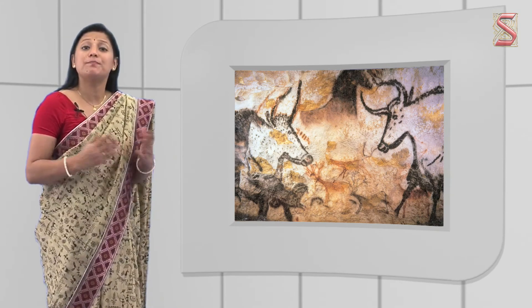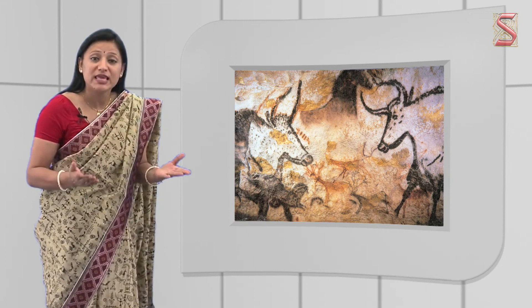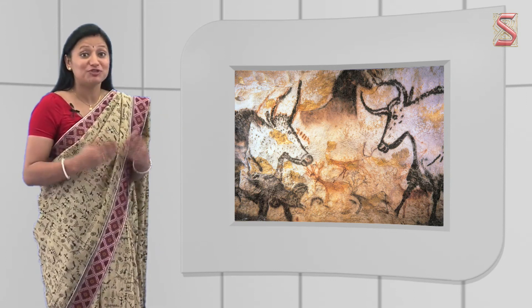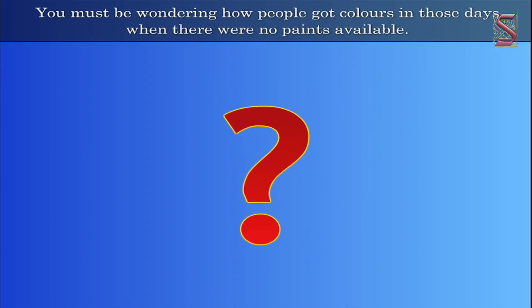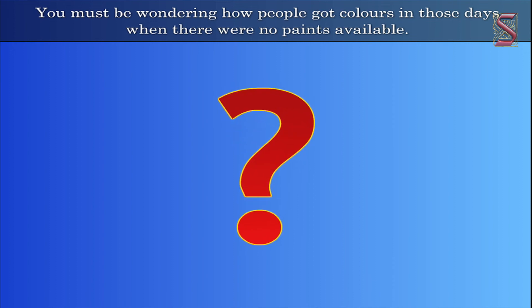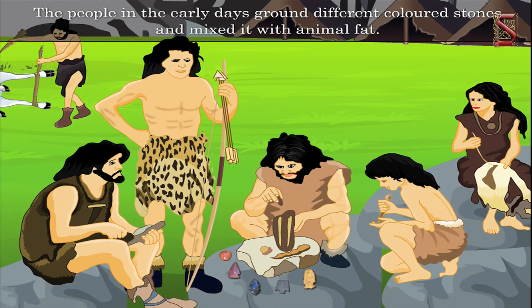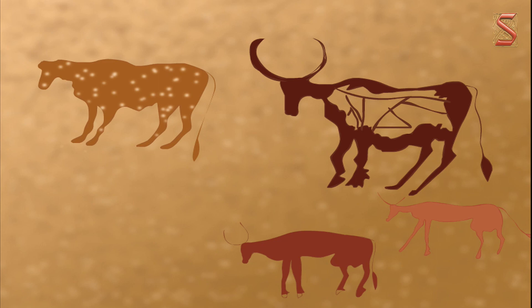Just like how many of us are interested in drawing and painting, the people in the early days were also very interested. The paintings and pictures drawn by the people of the early days can be found in many caves and rock shelters even today. You must be wondering how people got colors in those days when there were no paints available. The people in the earlier days ground different colored stones and mixed it with animal fat. The pictures were then painted on the walls of the rocks and caves with the help of bamboo brushes.